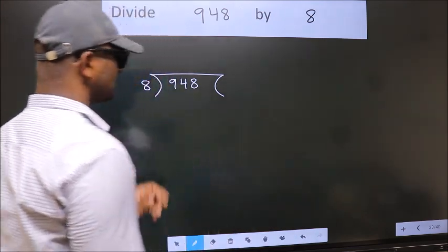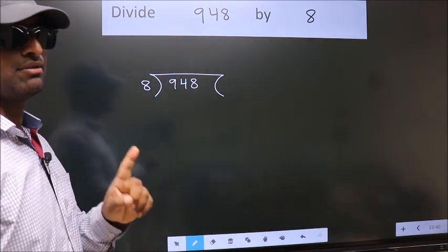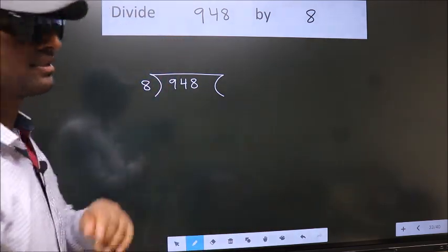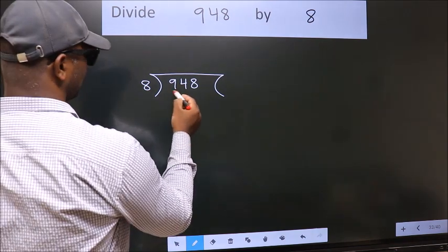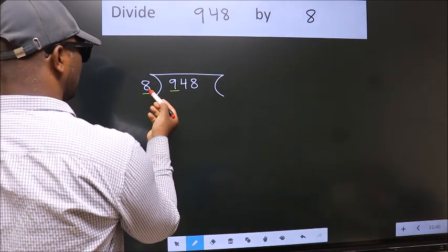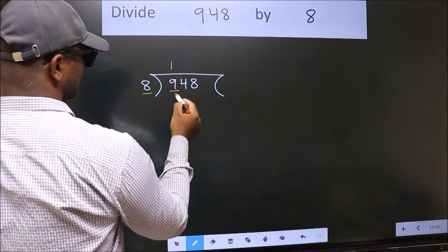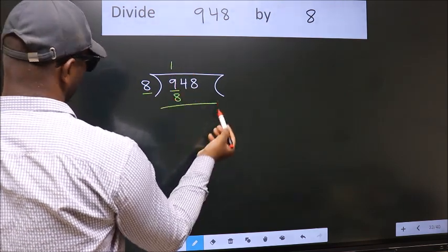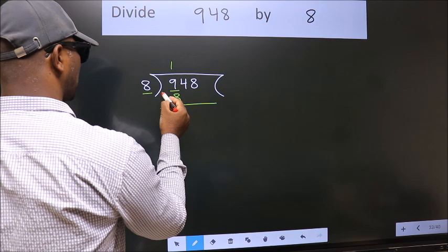This is step 1. Next, here we have 9, here 8. A number close to 9 in the 8 table is 8 once 8. Now we subtract.